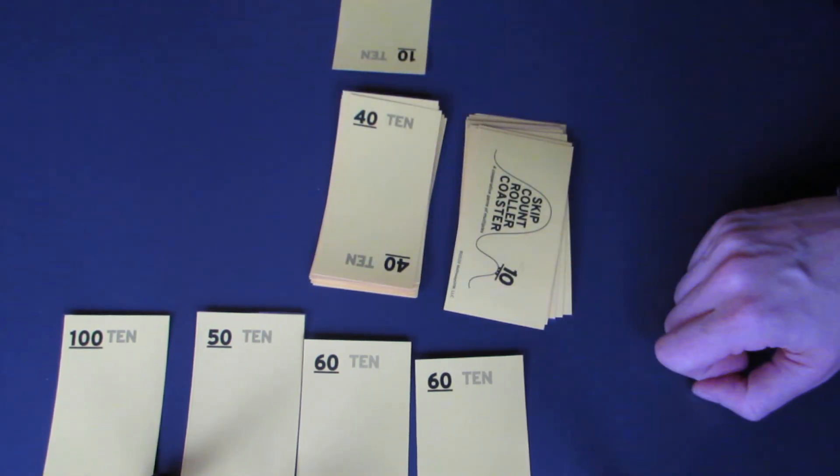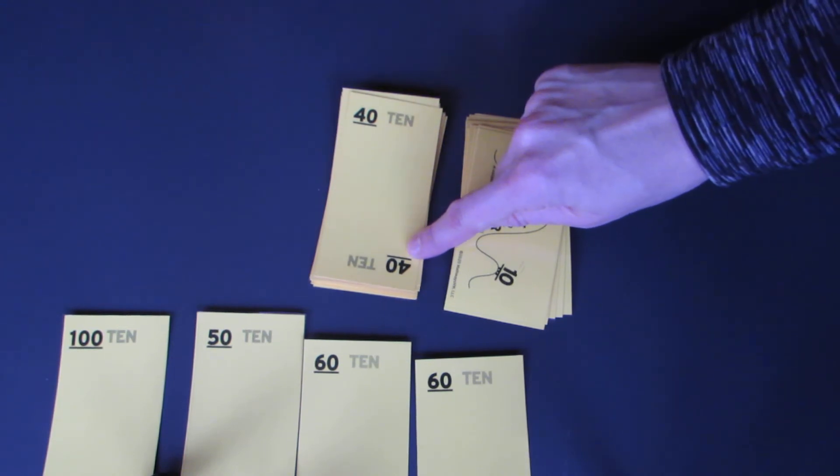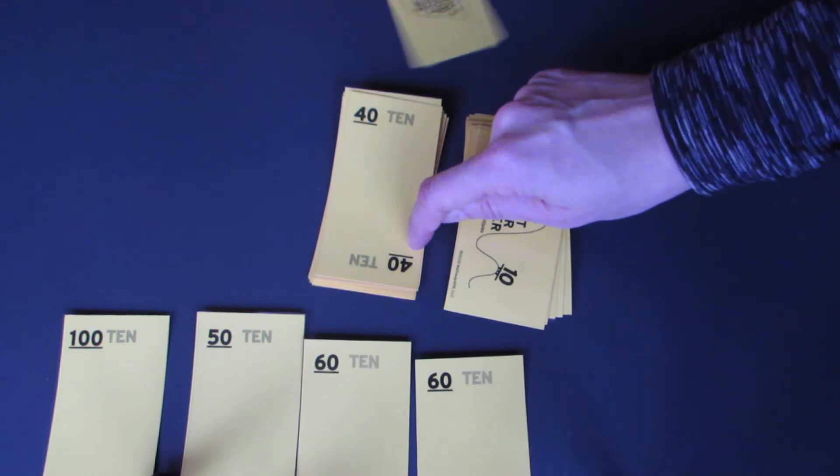Okay, we have 40. Do we have 10 more or 10 less here? Hey, I have 10. You have 10, but we can't play that on 40. Because 10 less than 40 is 30. And 10 more is 50.